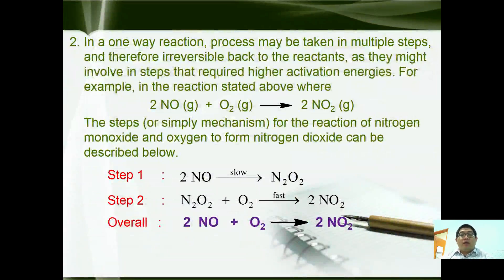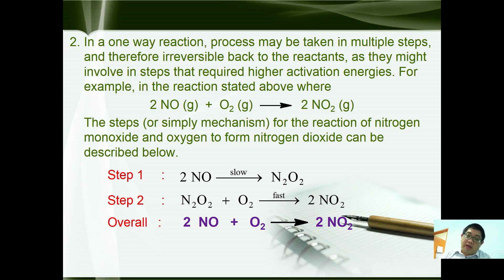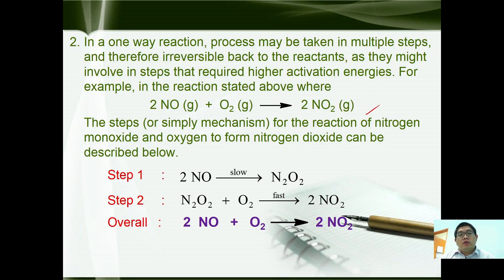In one-way reactions, the process may be taken in multiple steps, and therefore it is irreversible back to the reactants as it may involve steps that require higher activation energy. For example, in the reaction 2NO + O₂ → 2NO₂, the step-by-step mechanism for the reaction of nitrogen monoxide and oxygen to form nitrogen dioxide can be described as follows.